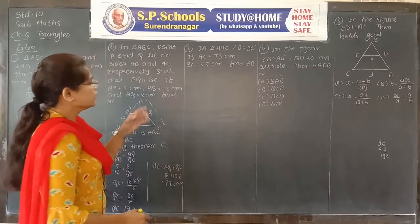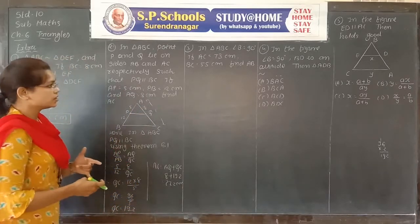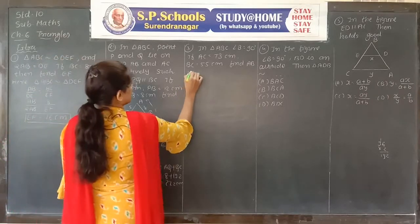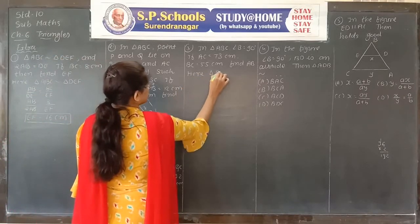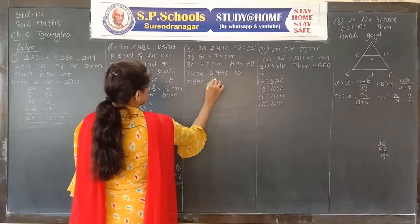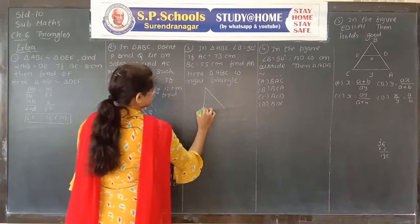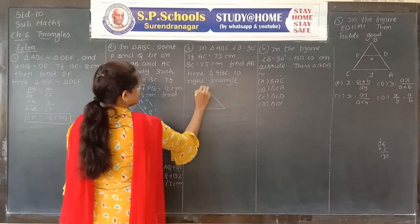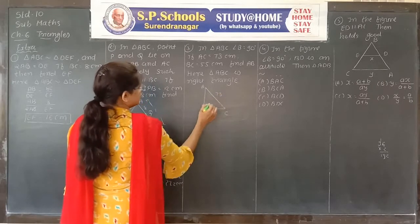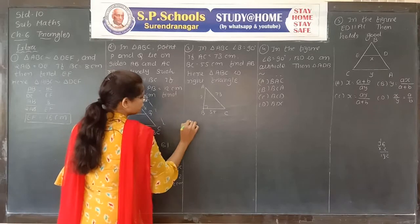Third problem: in triangle ABC, angle B is 90 degrees. AC equals 73 cm, BC equals 55 cm. Find AB. Triangle ABC is a right triangle with AC = 73 and BC = 55. We need to find AB using the Pythagoras theorem.